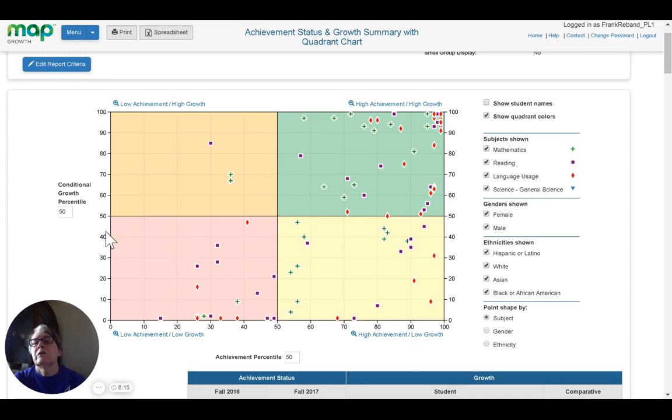And the students in the pink area have shown low achievement and low growth. So we want our students to move from this area into one of the other quadrants, preferably here.